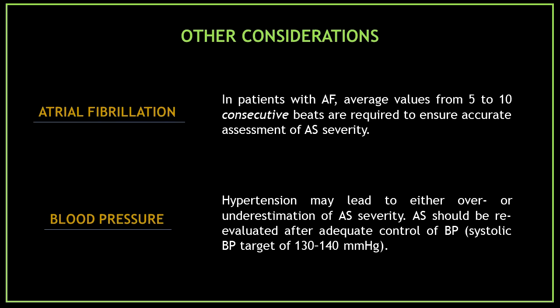Other considerations in the assessment of aortic stenosis are atrial fibrillation and blood pressure. In patients with atrial fibrillation, average values from 5 to 10 consecutive beats are required to ensure accurate assessment of aortic stenosis severity. Hypertension may lead to either over or underestimation of aortic stenosis severity, so aortic stenosis should be reevaluated after adequate control of blood pressure, with a systolic blood pressure target of 130 to 140 mmHg.